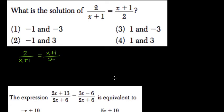I would treat this like a proportion and just cross-multiply. So here, 2 times 2 is 4, and x plus 1 times x plus 1 is what we'll have to evaluate using the distributive property.